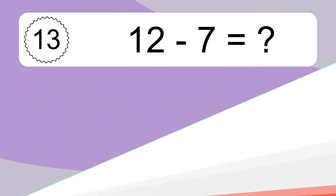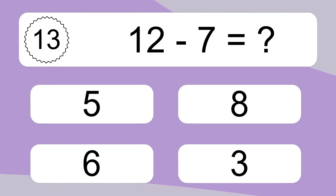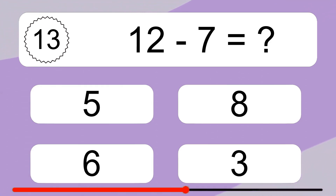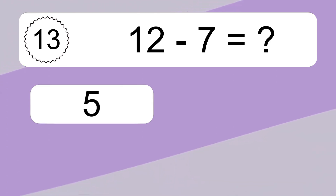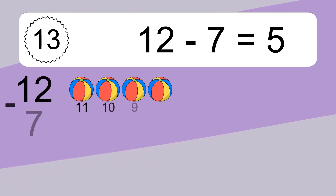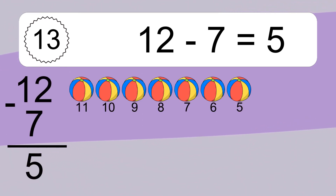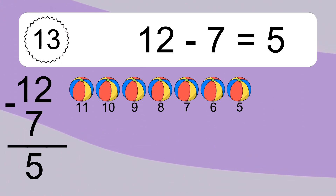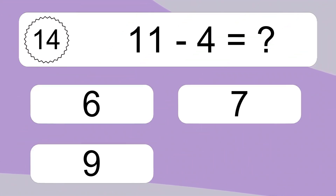14 minus 7 equals what? 14 minus 7 equals 7. Let's count it: 11, 10, 9, 8, 7, 6, 5, 4, 3, 2, 1.